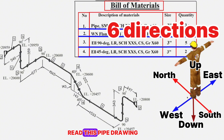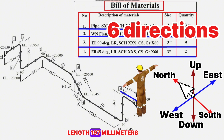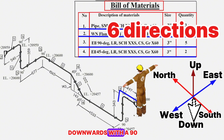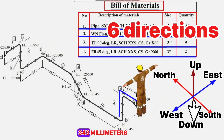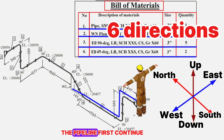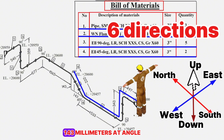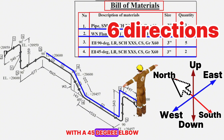We will start reading this pipe drawing from this point. The pipeline starts from this flange and extends northwards a length of 197 millimeters. At this point the pipeline turns downwards with a 90 degree elbow and continues 343 millimeters, then turns northwards with a 90 degree elbow and continues 1533 millimeters. The pipeline then continues northwards 143 millimeters, rises upwards 143 millimeters via a 45 degree elbow, then extends northwards again with a 45 degree elbow for 1365 millimeters.